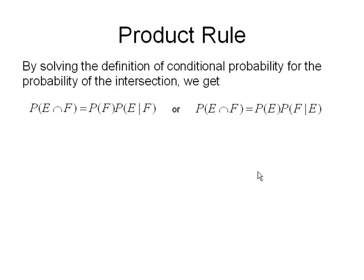One of the nice things about that definition of conditional probability is we can solve it for the intersection. So we would get the probability of E intersected with F equals P of F times P of E given F. Or if I were to switch things around, I'd get P of E intersected with F is P of E times P of F given E.